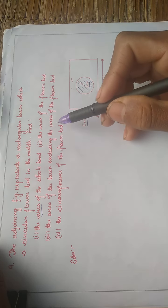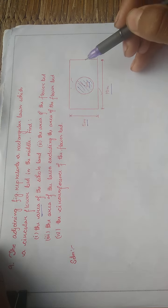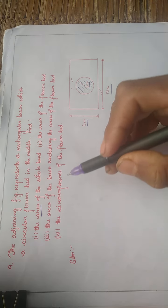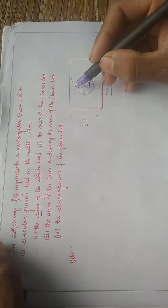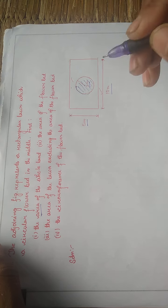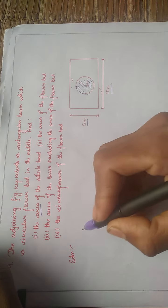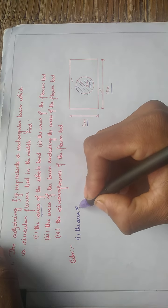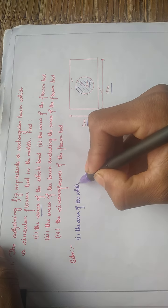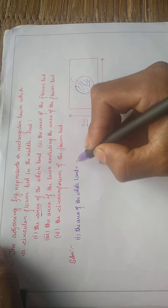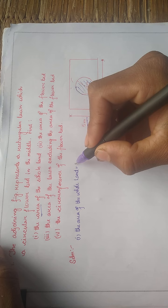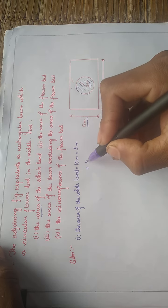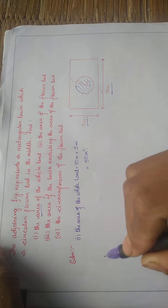The area of the whole lawn: since it is a rectangle, area equals length multiplied by breadth, which is 5 meters multiplied by 10 meters, giving 50 meters squared. That is the area of the whole lawn.